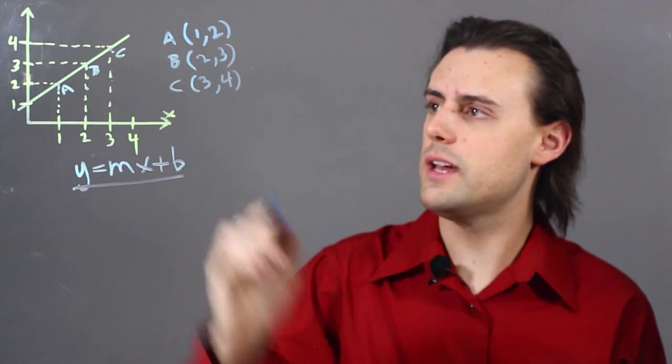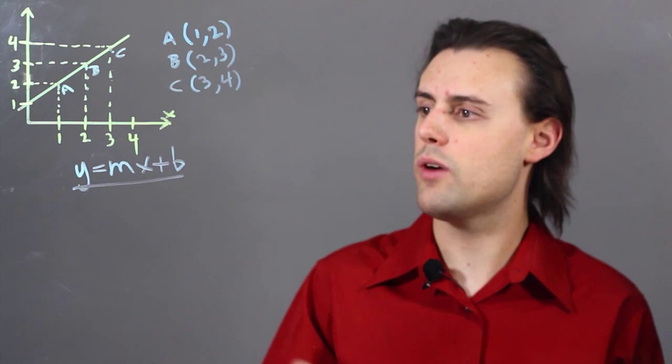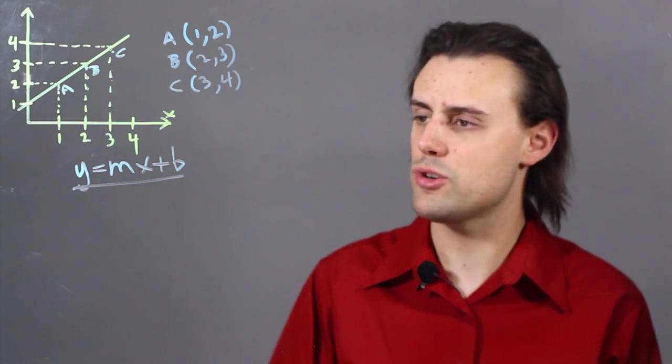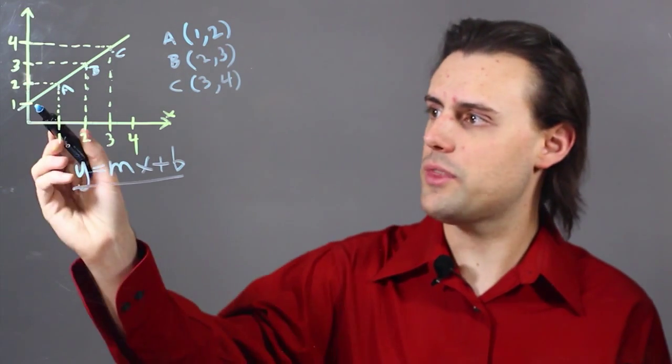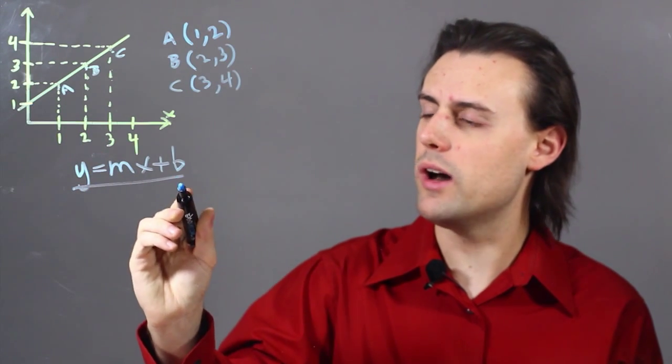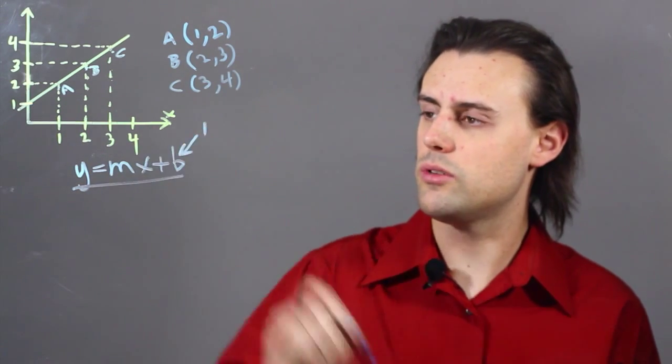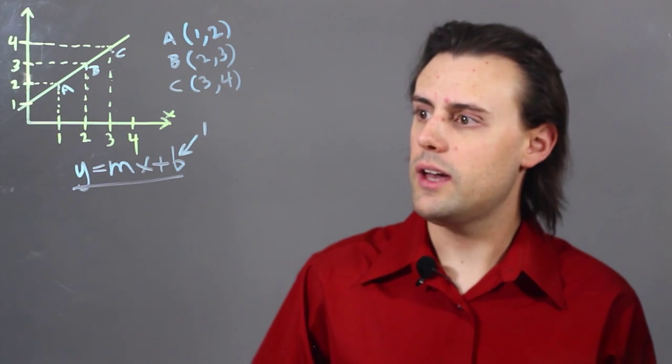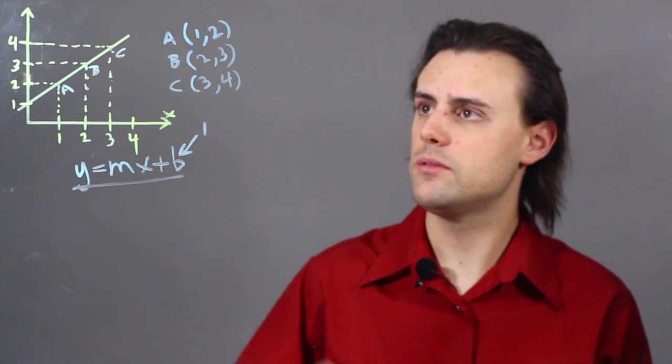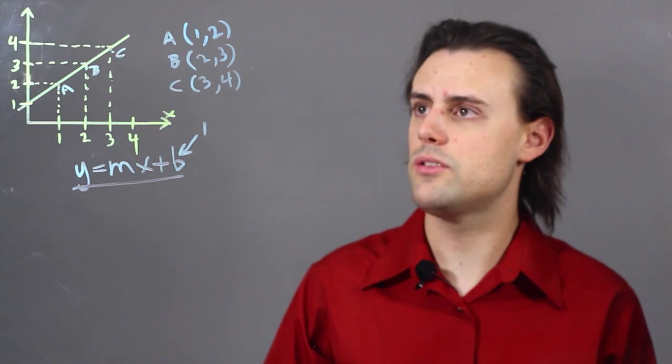And we can use our data from our graph to test whether, indeed, we have proportionality here. We see that the y-intercept is equal to 1, so b is going to be equal to 1, and we can calculate the slope between any of these two points.